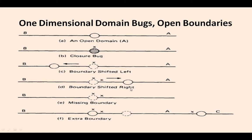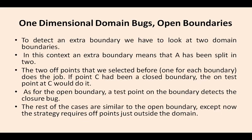Here, boundary shifted to right. Here, missing boundary — the boundary is not there. Here, extra boundary is existing for the open boundaries. These are one-dimensional domain bugs in the open boundaries — some examples.